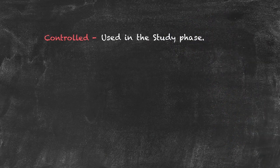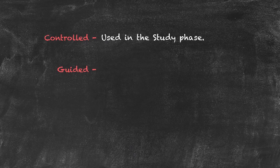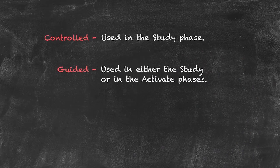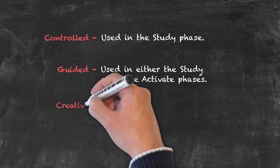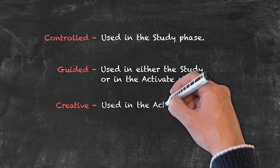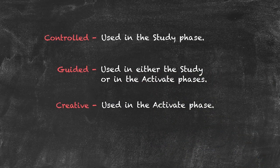Speaking activities will come in many different forms, but we can generalize them into three basic types. Controlled activities tend to be used in the study phase, where the teacher helps students in terms of what they need to say and how they go about saying it, so there's a high level of structure. A guided activity has slightly less structure and can be used in either the study or the activate stages. The final type is called a creative activity, used in the activate phase, where we give a scenario or a very small amount of structure and ask students to create their own answers.